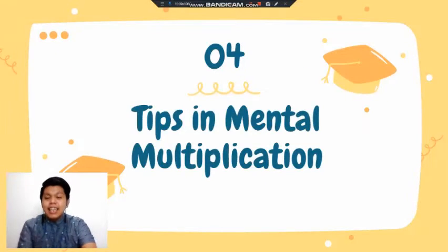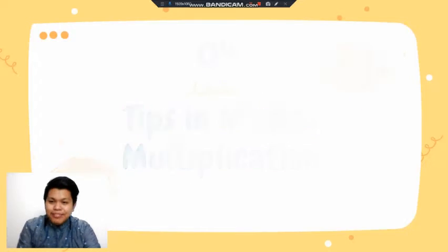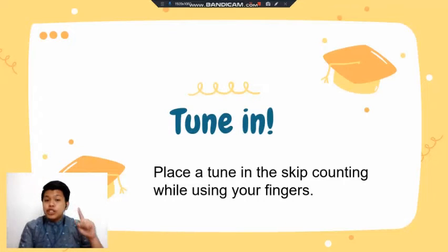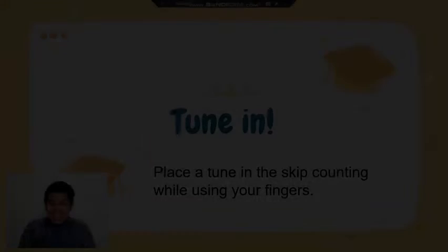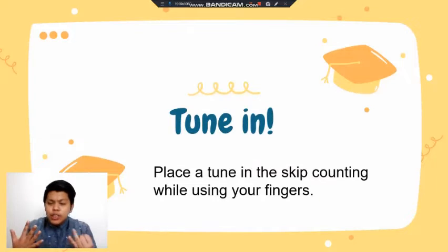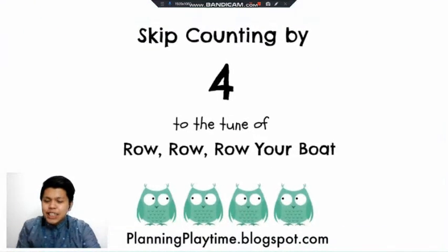Now I will give you tips for mental multiplication. The first tip is called 'Tune In.' This is a strategy where you place a tune and do skip counting while using your fingers. Let me give you an example — let's watch this one.